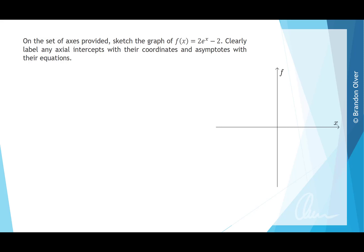On the set of axes provided, sketch the graph of f(x) = 2e^x - 2. Clearly label any axial intercepts with their coordinates and asymptotes with their equations.